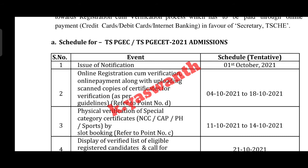We have to check the seats for the dates 11-10-2021 to 14-10-2021. We have to check the date and the nearest Help Line Center. We have to check the certificate verification change calls.